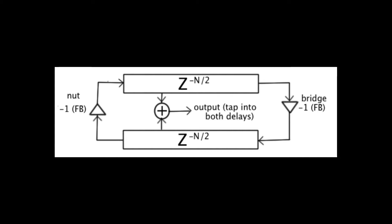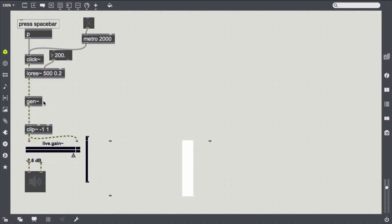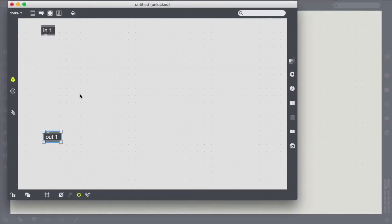The components include an excitation signal bringing energy into a system, a pickup withdrawing energy, and a low-pass filter representing friction loss at the boundaries. The simplest case of string modeling is called the Karplus-Strong algorithm and consists only of a tunable feedback delay line with a damping filter.